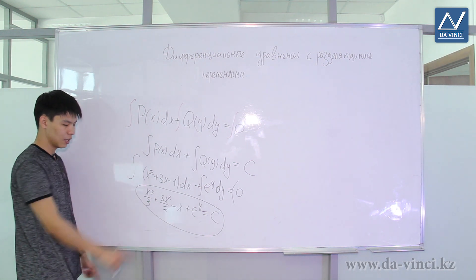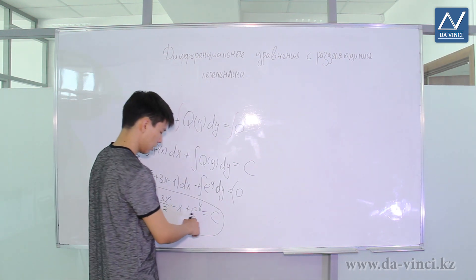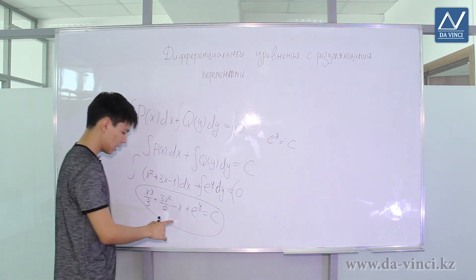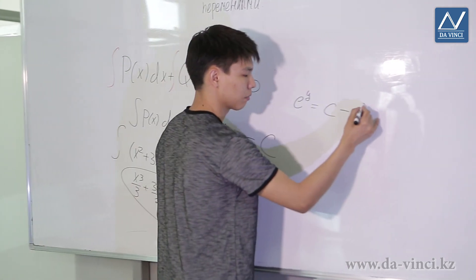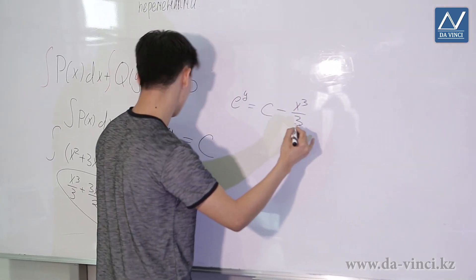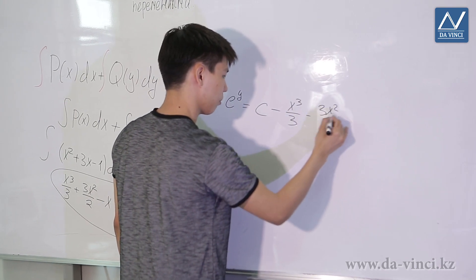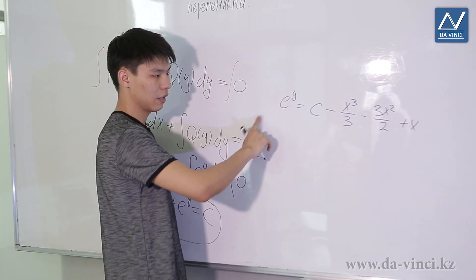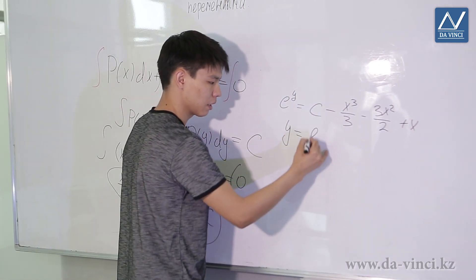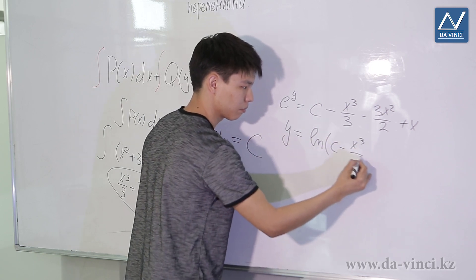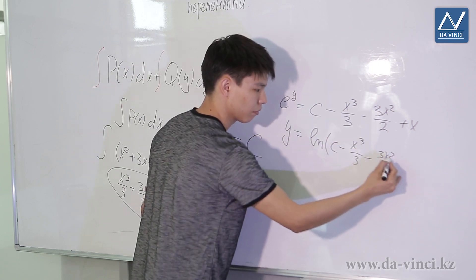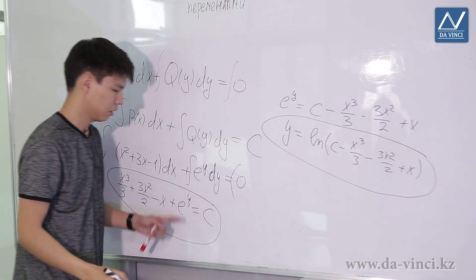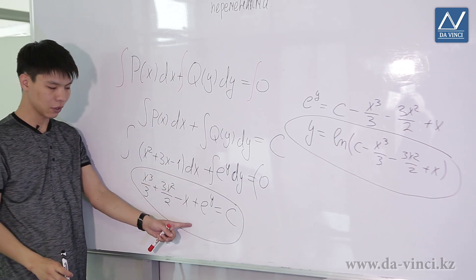We can express y from this solution as follows. First we express e^y: e^y equals c minus x³/3 minus 3x²/2 plus x. Now we take the natural logarithm on both sides, and we get y equals ln of that expression. We've obtained a general solution to the original equation, though in general we could also leave the solution in the implicit form.